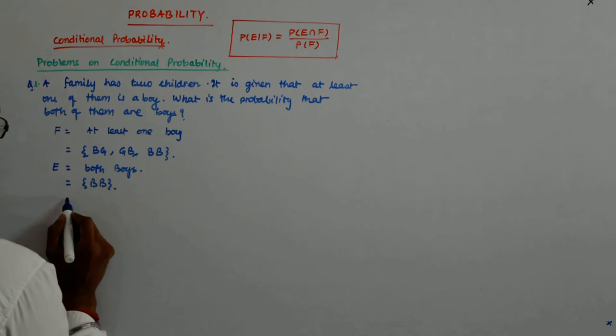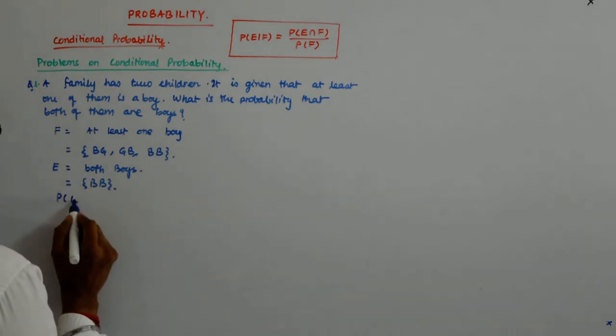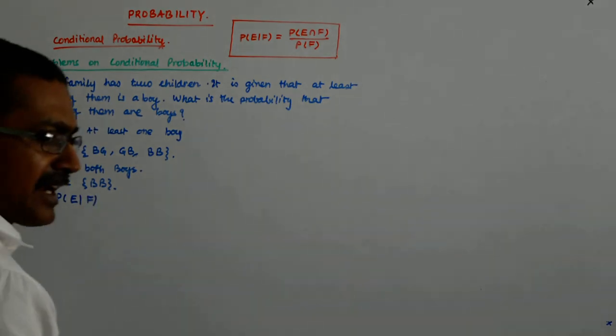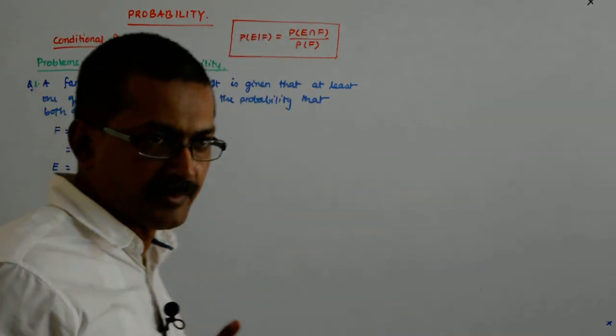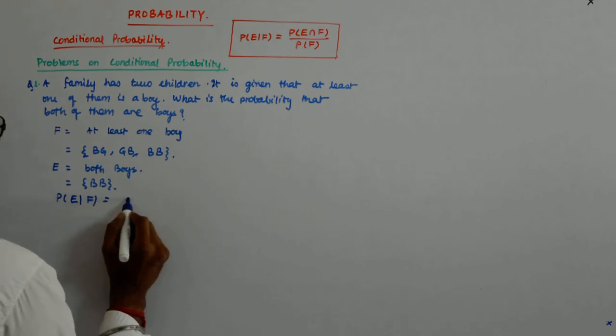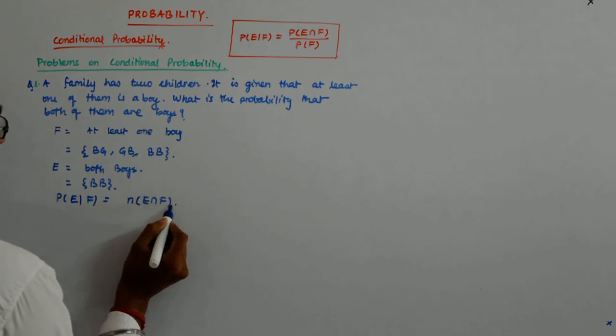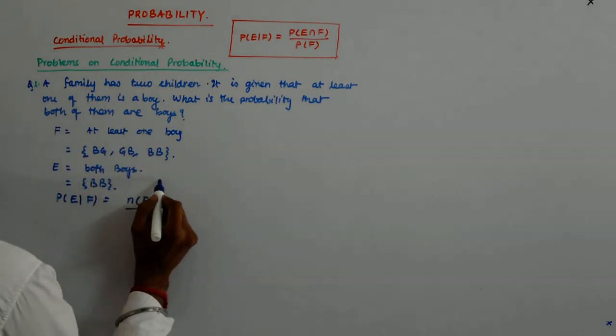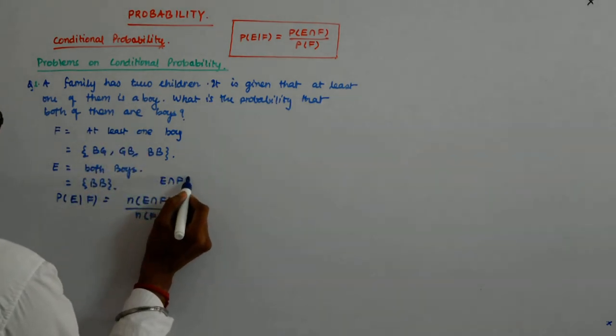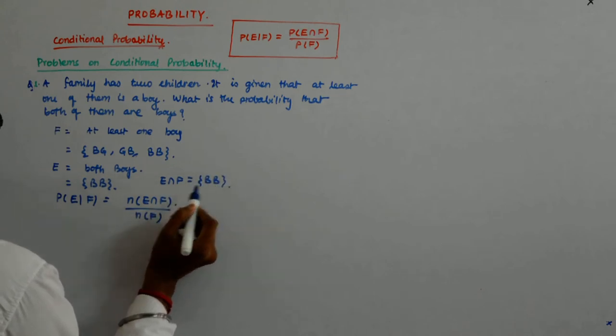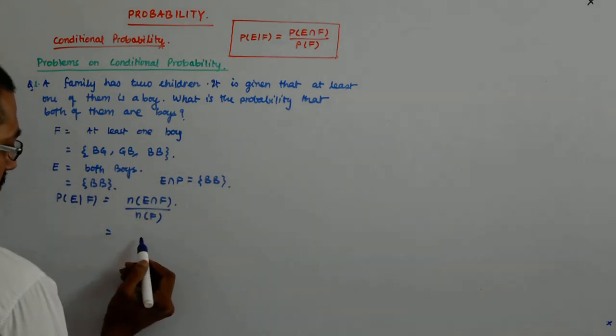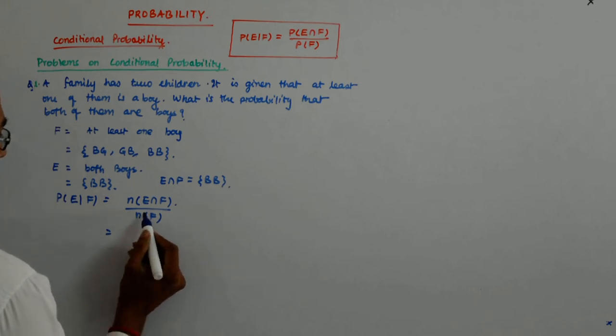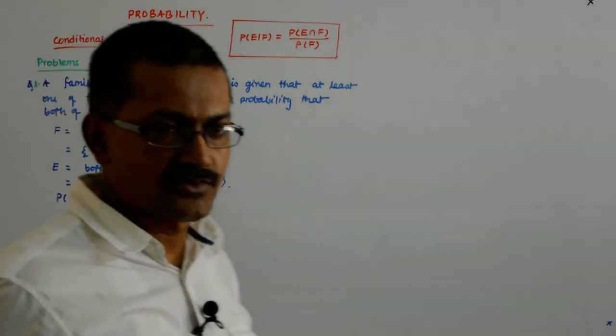Now I want probability of E both boys such that it is given that one of them is a boy. That will be nothing but N of E intersection F upon N of F. Now E intersection F is B, B. So that is 1 upon 3 straightaway.